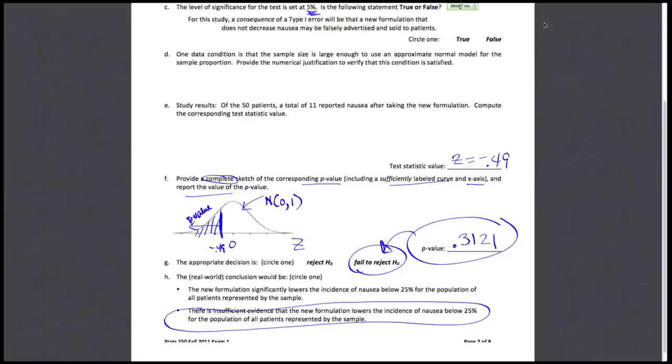And then a fail to reject would lead to a conclusion that there is not enough evidence to say that that new formulation is going to do better, that it will lower that 25 percent nausea rate. There is insufficient evidence. Now if you had gotten the wrong p-value due to a wrong test statistic perhaps, and if you had said 'reject H₀' as your decision because your p-value was small, you would have made a conclusion which is the first bullet here instead. So we watch for consistency: the conclusion must go consistent with the decision, the decision should be consistent with your p-value, and that p-value consistent with the picture you sketched that of course comes from your test statistic you computed. So there's a full hypothesis test for a population proportion.